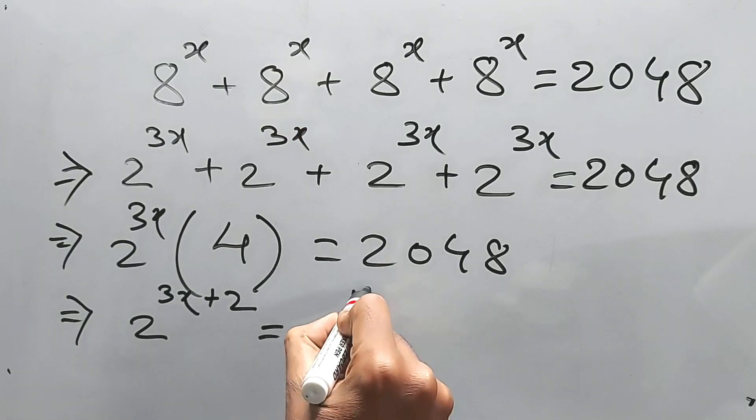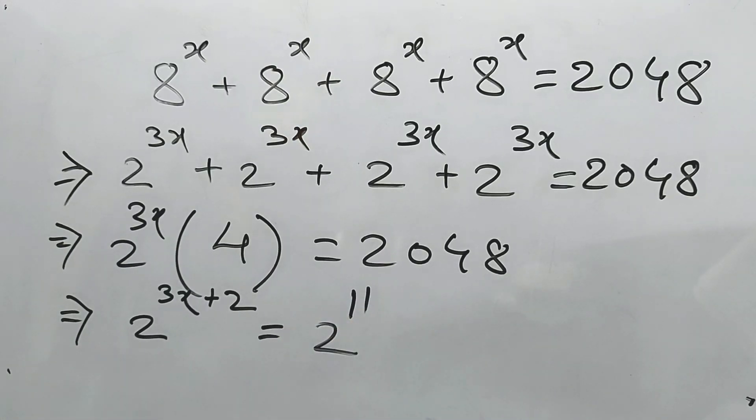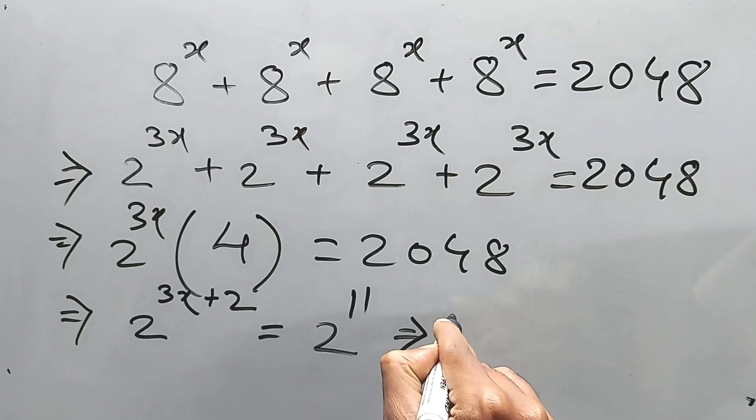And this implies, because the bases are same, we can directly write it 3x plus 2 is equal to 11, right?